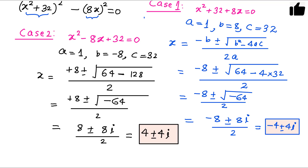So we got all 4 roots: two roots are −4 ± 4i and the other two roots are 4 ± 4i. I hope you enjoyed this video. If you did, please share it with your friends, like this video, and subscribe to my channel. Thanks for watching and I will see you in the next video.